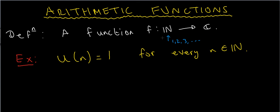Let's have a simple example of an arithmetic function. Consider the unit function: u(n) equals 1, for all natural numbers n — so all positive integers. For instance, u(1) equals 1, u(2) equals 1, u(10 million) equals 1. This is an arithmetic function because it takes every natural number to the number 1.